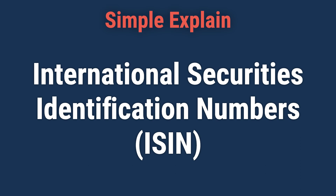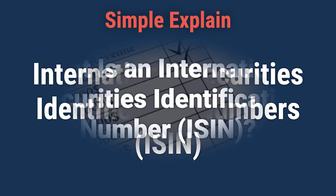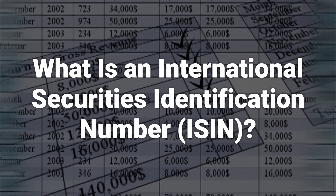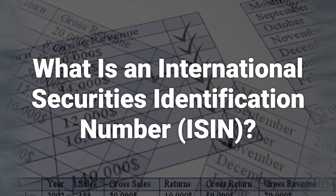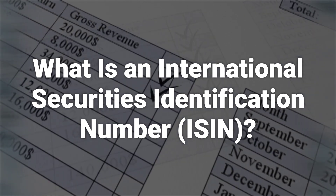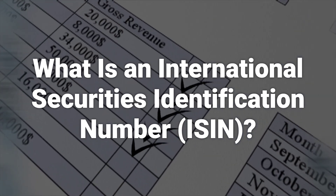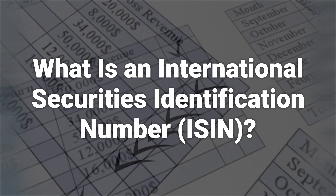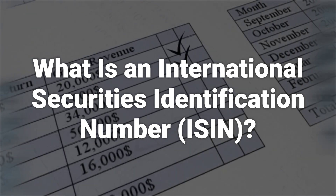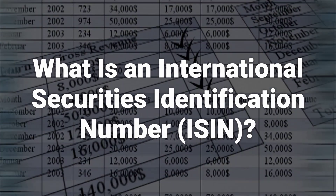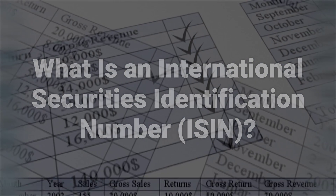Today, we will talk about International Securities Identification Numbers, ISIN. An International Securities Identification Number is a 12-digit alphanumeric code that uniquely identifies a specific security. The organization that allocates ISINs in any particular country is the country's respective National Numbering Agency, NNA.